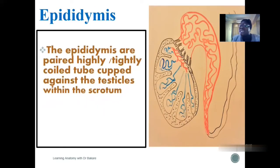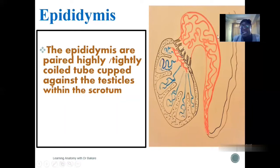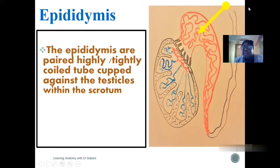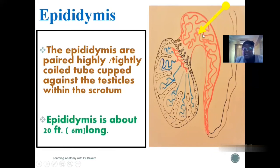Structurally, the epididymis is a tightly coiled tube. You can see that the tube coils over itself. It is seen at the posterior part of the testes. There are two in number because we have two testes, one on the right and one on the left. So we have the epididymis as a highly coiled tube seen at the posterior part of the testes. As spermatogenesis occurs within the testes, the sperm cells and sperm fluid are collected and transported through this ductile system, the initial region of which is the epididymis. The epididymis is about six meters long.